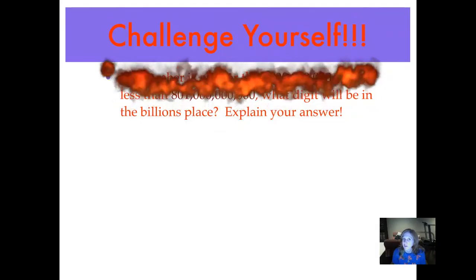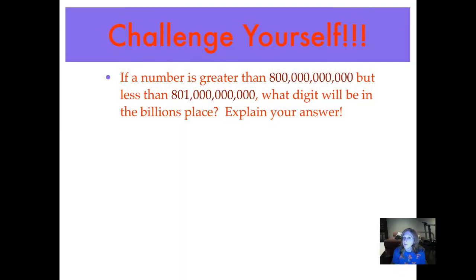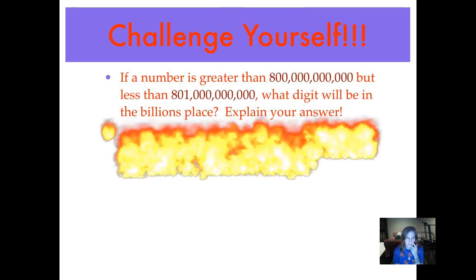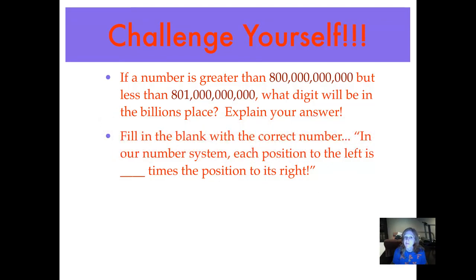Here's your first challenge problem: if a number is greater than 800 billion but less than 801 billion, what digit will be in the billions place? Explain your answer. Here's the second challenge problem — fill in the blank with the correct number: in our number system, each position to the left is blank times the position to its right.